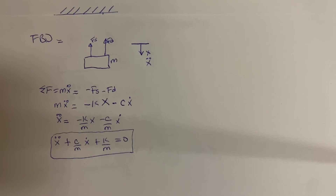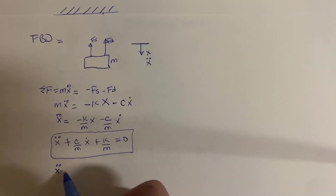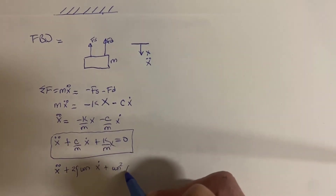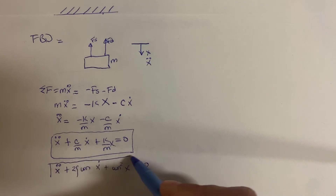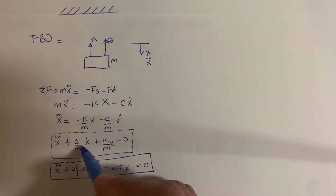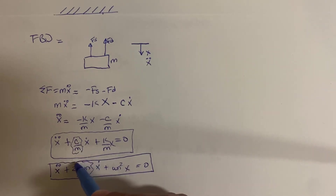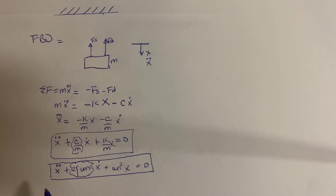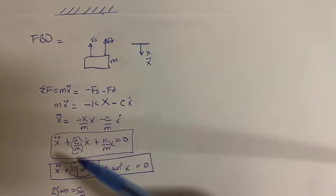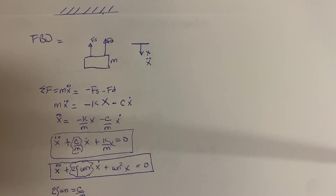The characteristic equation of a free vibrating system with damping is of the following form. These two equations can be made equivalent, and we can compare the coefficient of the velocity term with the coefficient of velocity in the characteristic equation, which gives us: 2ζωn equals c/m.